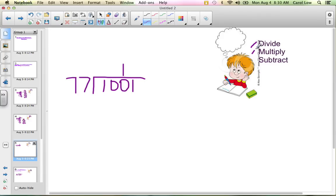77 into 100 goes one time. And I multiply. 1 times 77 is 77. And now I subtract. And notice how I line this up. The 77 is going right here. I didn't put it over here. I put it right where it belongs. And I have to borrow. So this becomes a 10. This is going to become a 9. 10 take away 7 is 3. 9 take away 7 is 2. Can I bring down the next number, which is a 1?